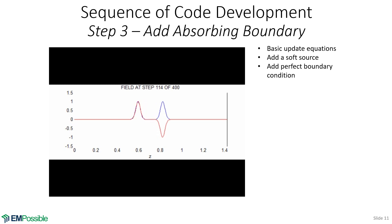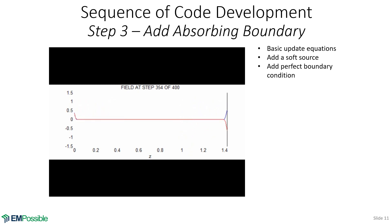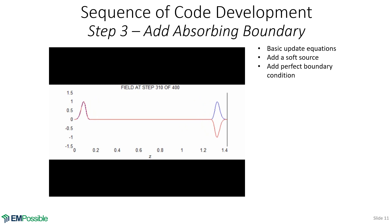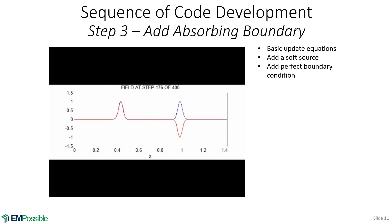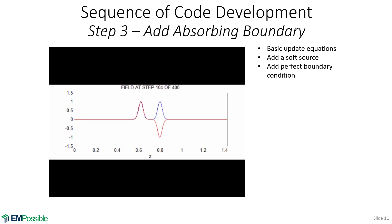Next we add a perfect absorbing boundary condition, so the wave appears to keep propagating off the grid forever. What we're actually doing is subtracting the wave in the cell just outside the grid. This is why we wanted the simple soft source first — to throw pulses at our boundaries and make sure the absorption is working. We typically don't want the pulse to reflect off the boundary, because if we're trying to measure how much a pulse reflects off our device, we can't separate that from grid boundary reflections.